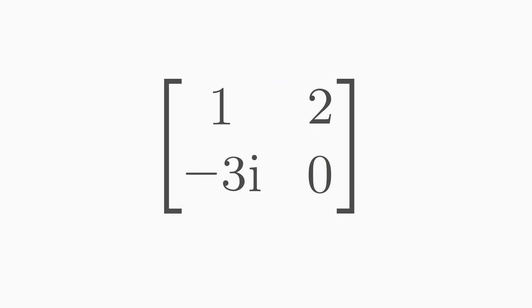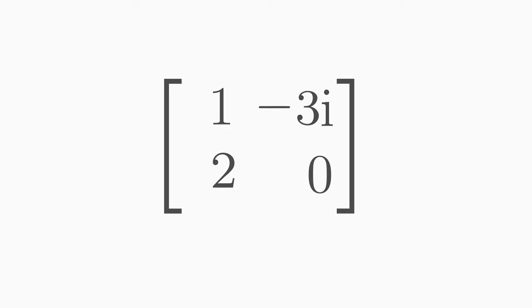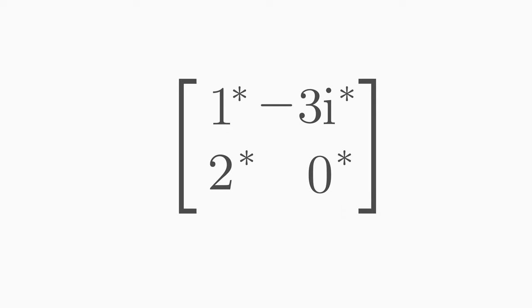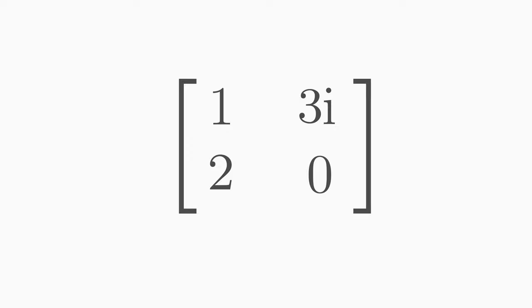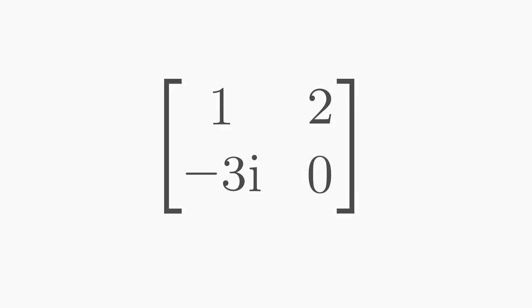Here you can see an example of a non-Hermitian matrix, because if you transpose it and complex conjugate it, you get a completely different matrix which is not equal to the original one.